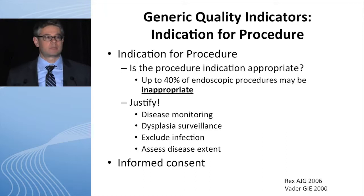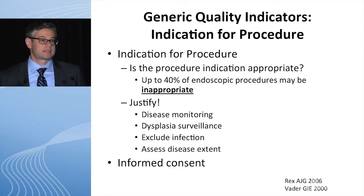These are generic quality indicators that we need to be thinking about, and I urge anyone who does endoscopic procedures to really take a look at what these latest updates are — not only what the quality metrics are and what they should be, but also what the target should be, what percentage, and the frequency of the needed endoscopic measures we should actually be reporting. In addition to listing dozens of endoscopic quality measures, this series of papers prioritizes them for us. The number one priority is describing the indication for the procedure. Is the procedure indication appropriate? There's data showing that up to 40% of endoscopic procedures may actually be inappropriate.